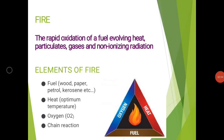The next topic is fire hazard. Fire is a rapid oxidation of fuel which evolves heat, particulates, gases, and non-ionizing radiation. The main ingredients of fire are fuel (such as wood, paper, petrol, or kerosene), heat, oxygen, and chain reaction. Fire can be prevented by reducing or limiting the fuel, keeping the temperature down, reducing the supply of oxygen, or causing a reduction or stoppage in the chain reaction.